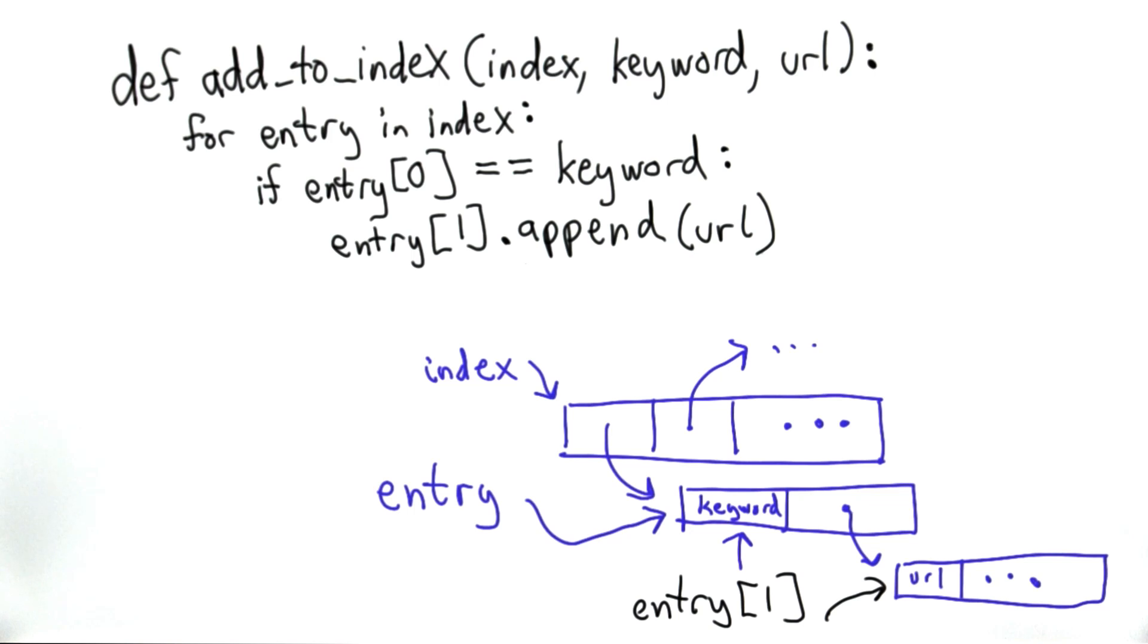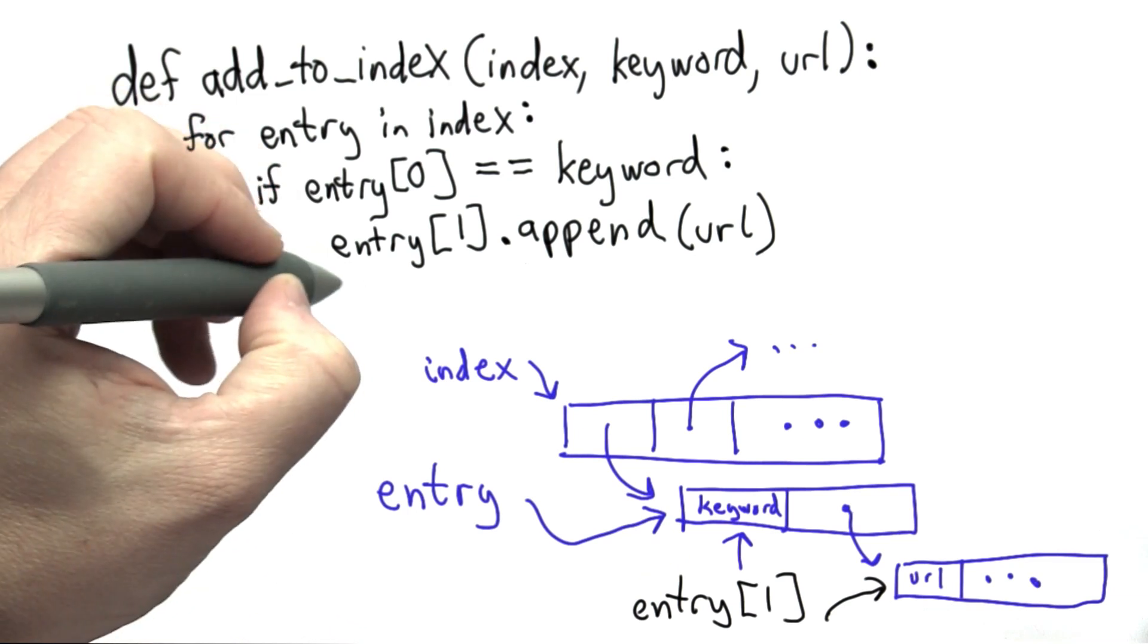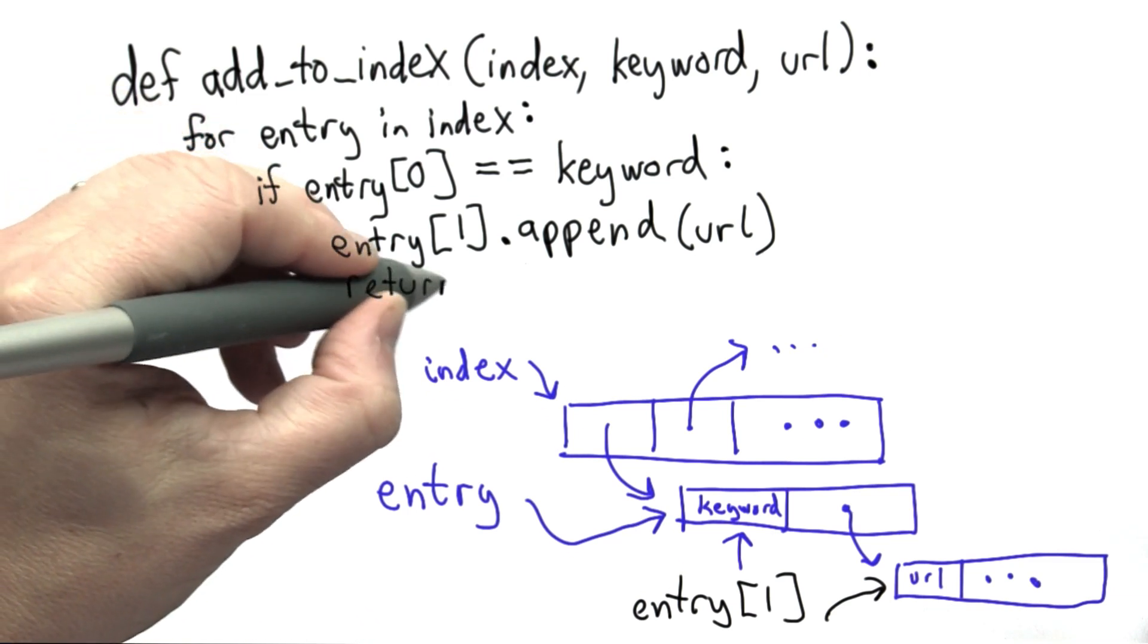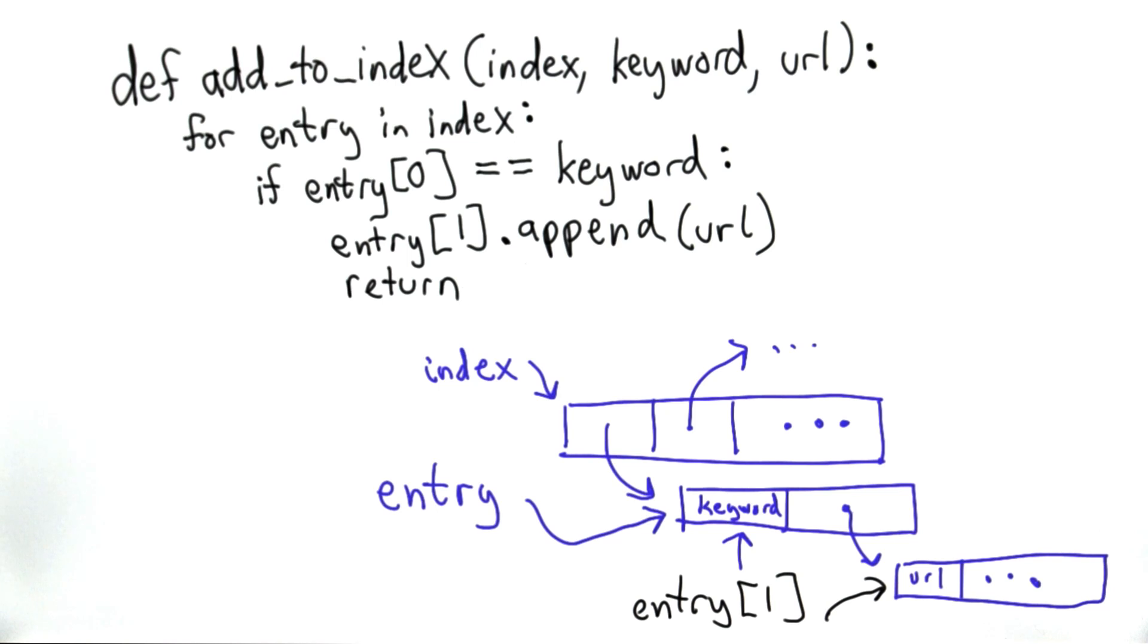One approach would be to use break. That would end the loop. What we want to do instead is really end the whole procedure. If we did break, we'd still have the problem of how to deal with a case where the keyword wasn't found. So here we're just going to return. We're all done with addToIndex. We've added the URL where it belongs.